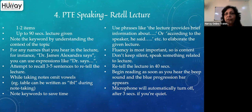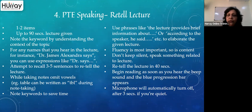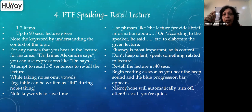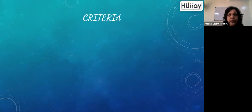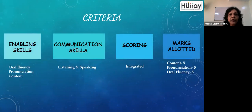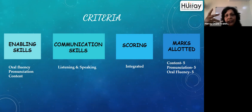The retelling should be finished within 40 seconds — about four to five sentences. A progression bar and timer on screen will show your remaining time. The criteria for Retell Lecture are oral fluency, pronunciation, and content. Since you are listening to a lecture and retelling it, this involves integration of listening and speaking skills — integrated scoring. The marks are five each for content, pronunciation, and oral fluency.